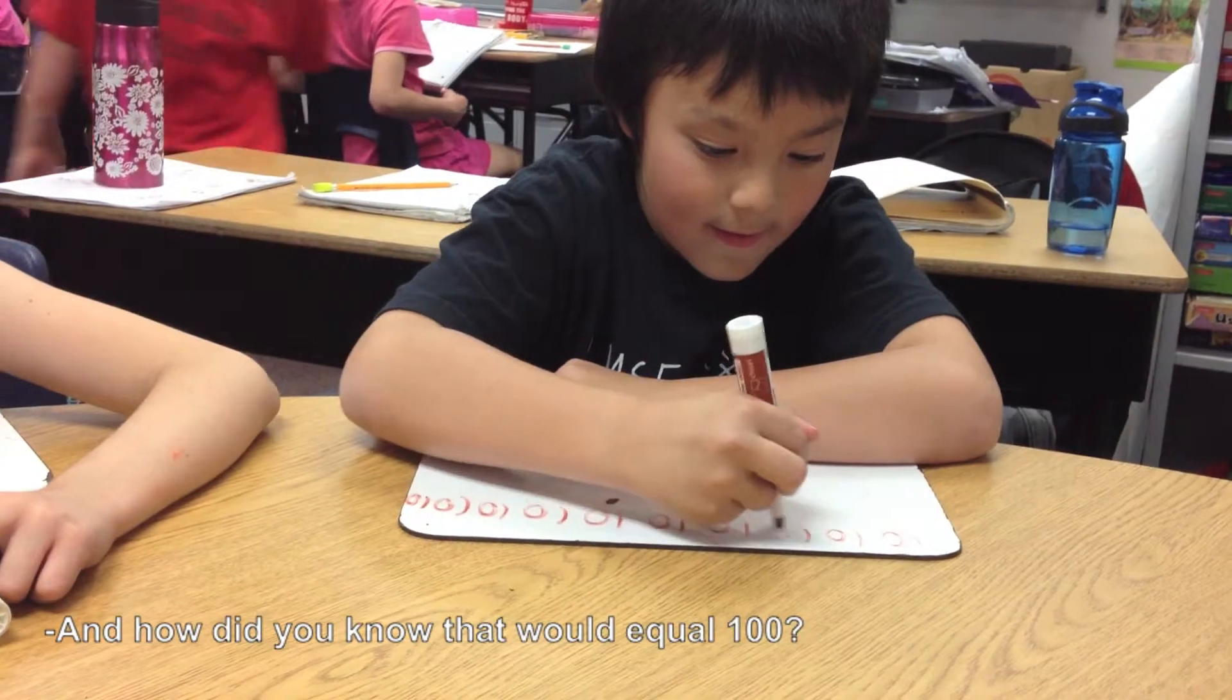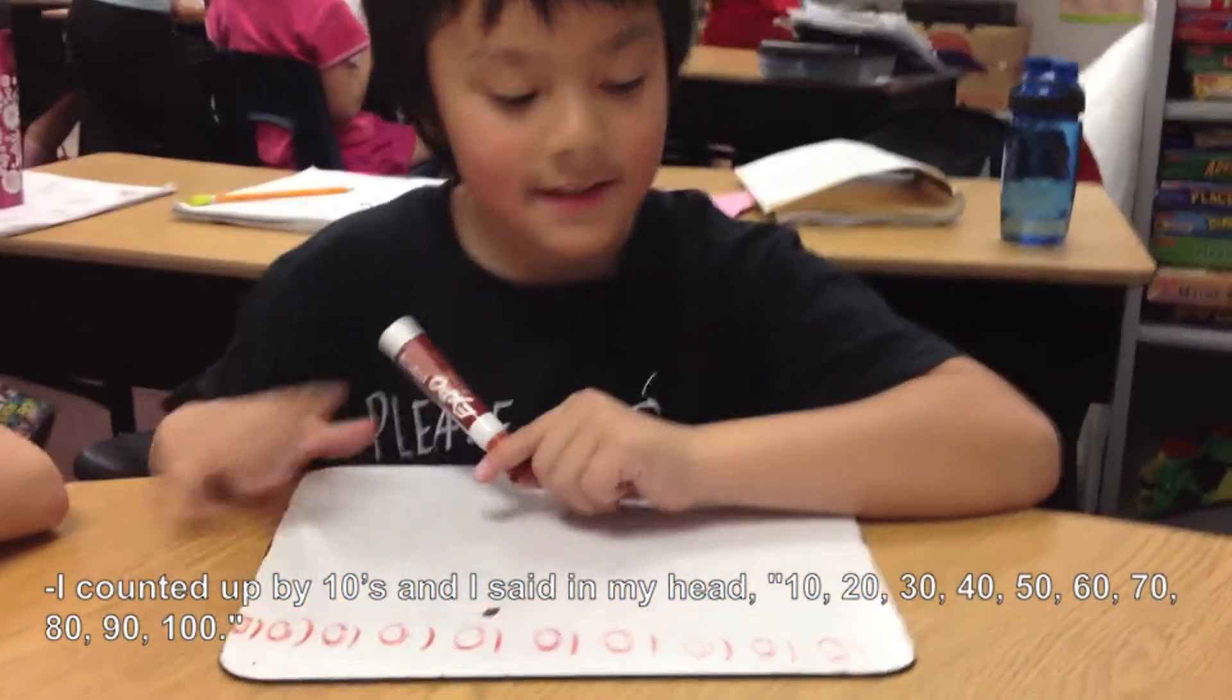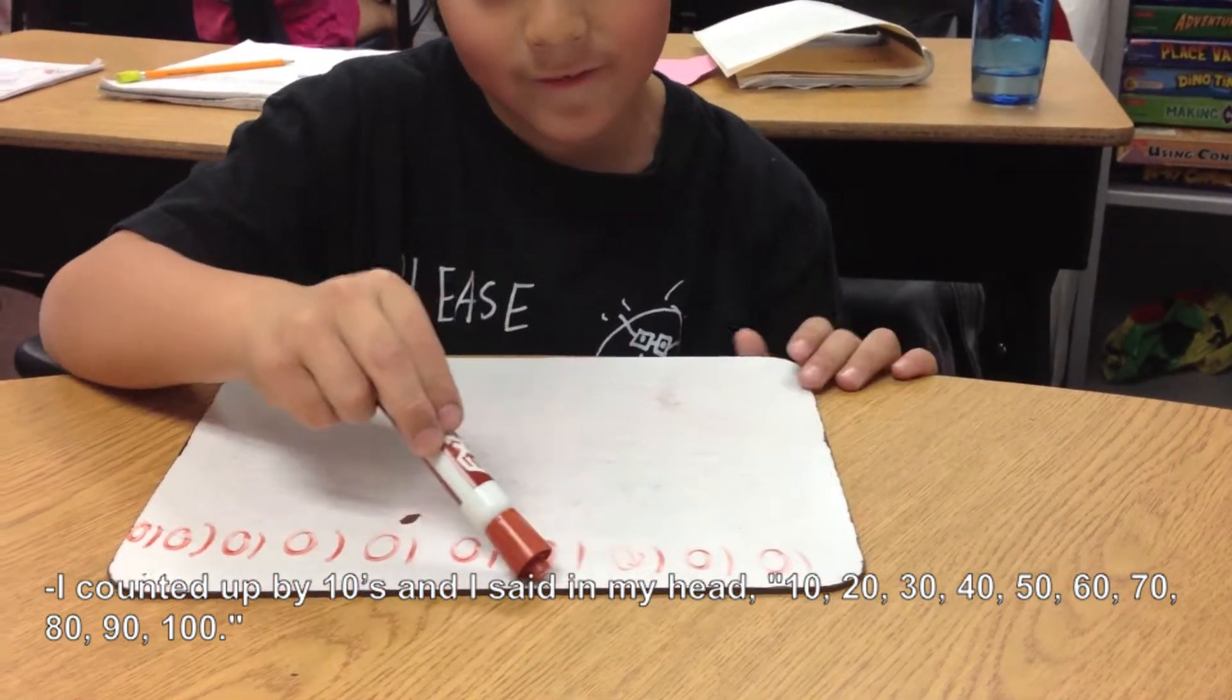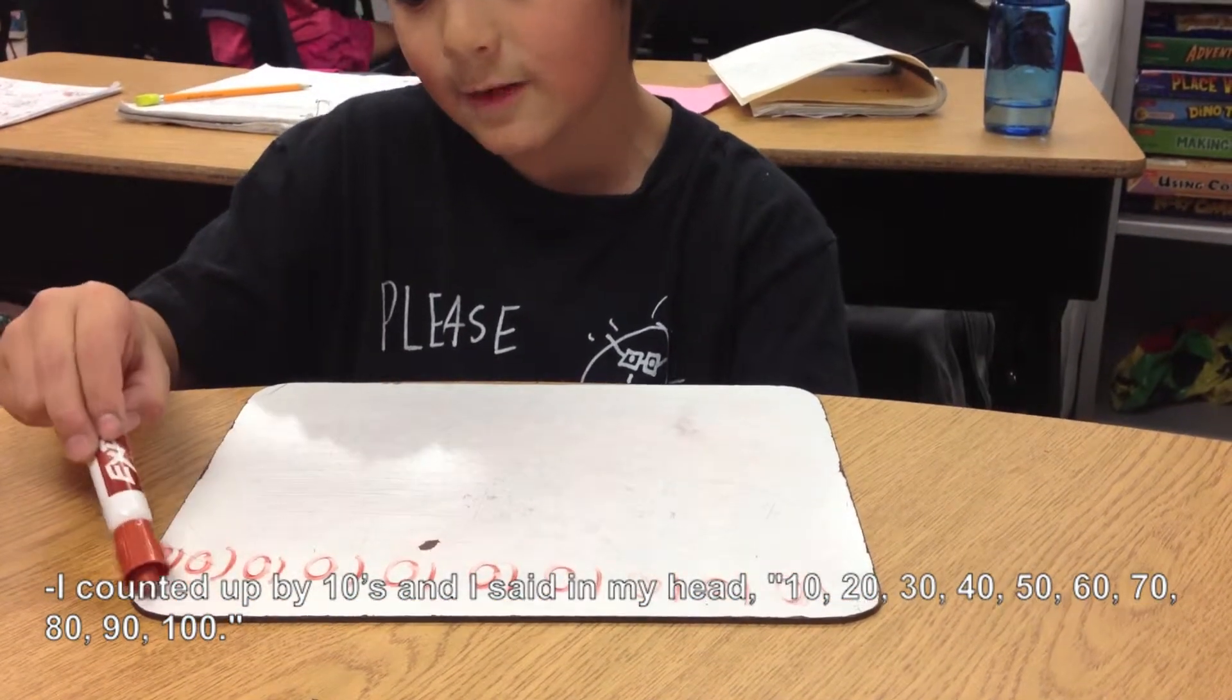And how did you know that would equal a hundred? I counted up by tens and I said in my head ten, twenty, thirty, forty, fifty, sixty, seventy, eighty, ninety, one hundred.